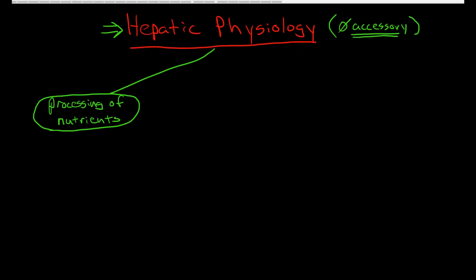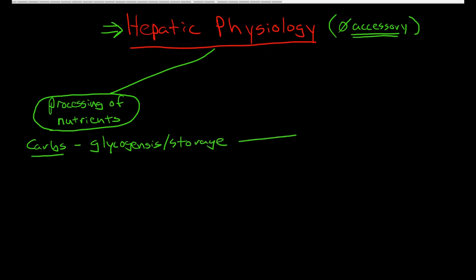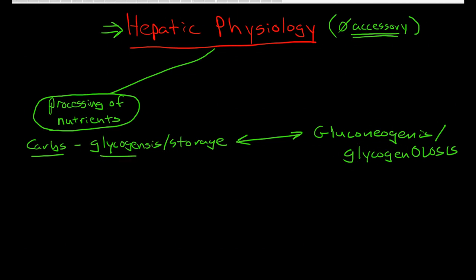So, processing of nutrients. There are three main classes of nutrients: carbohydrates, proteins, and lipids. The liver is involved in processing carbohydrates by mediating the balance between glycogenesis and storage, gluconeogenesis, and glycogenolysis. Glycogenesis is the creation of glycogen, and glycogenolysis is the breakdown of glycogen in order to make glucose.